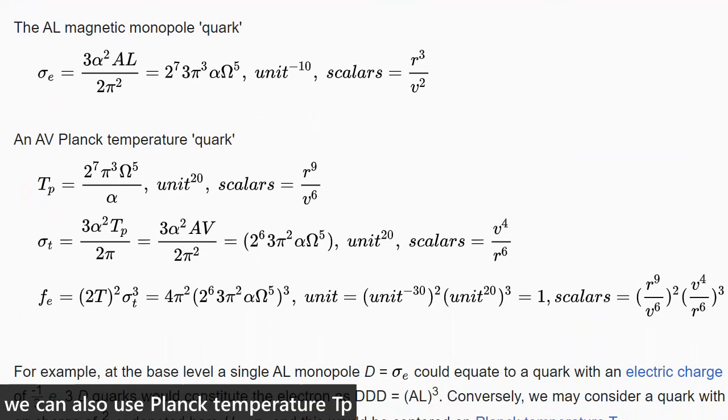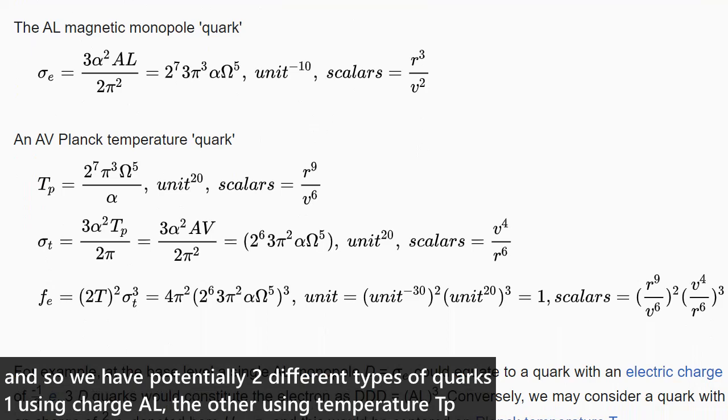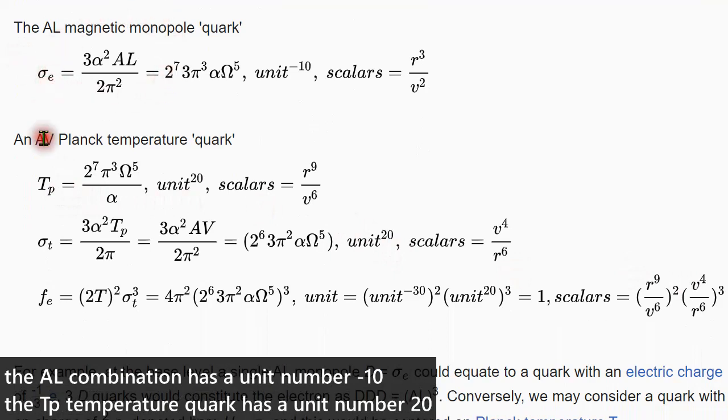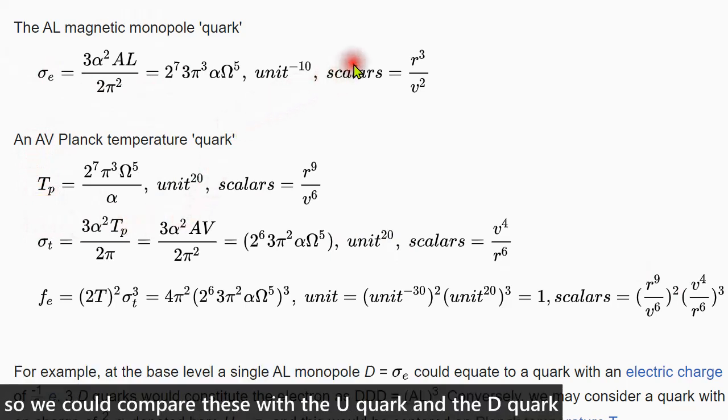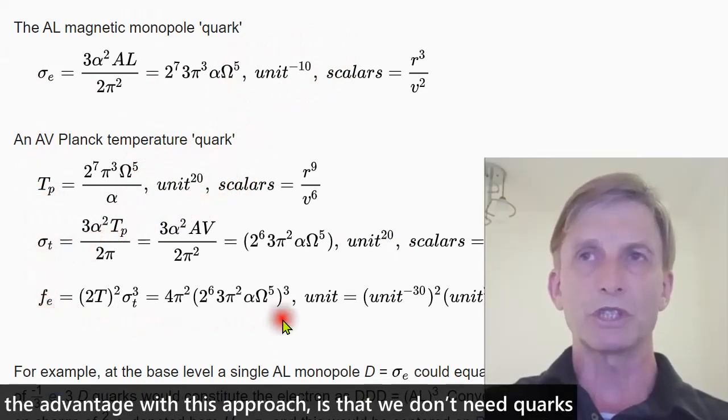We can make our electron using this AL combination. We can also use temperature. And so we have potentially two different types of quarks. One using charge, the other using temperature. The AL combination has a unit number minus 10. The temperature quark has a unit number 20. And so we could compare these with the U quark and the D quark.